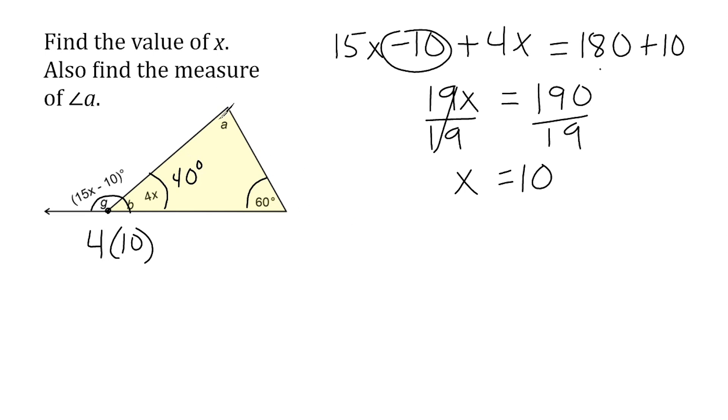So, we know that we have to find angle A. So, we're going to say that A plus this angle, 40 degrees, plus this angle, 60 degrees, is equal to a total sum of 180 degrees. Remember, the interior angle sum of any triangle is always equal to 180 degrees.